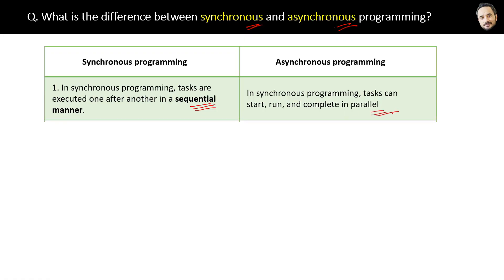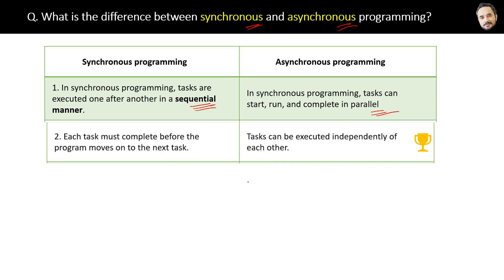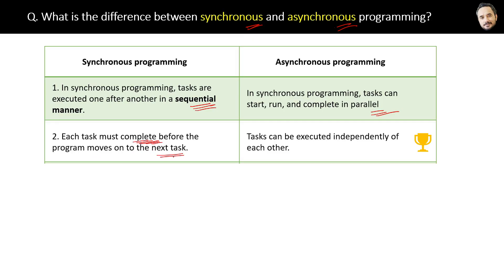In synchronous programming, each task must be completed before the program moves on to the next task, so one function must finish before executing the next function in the sequence. Whereas in asynchronous programming, tasks can be executed independent of each other.